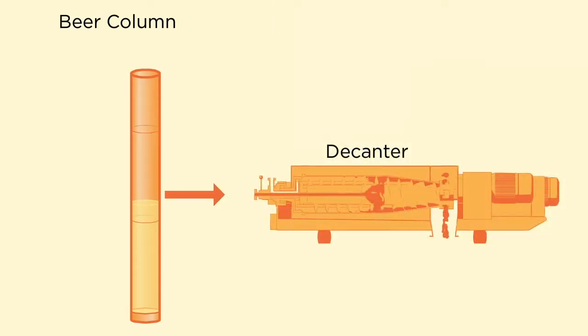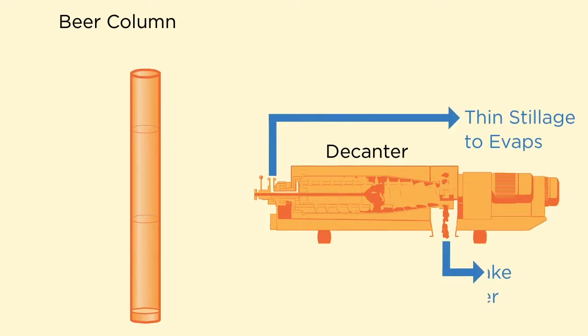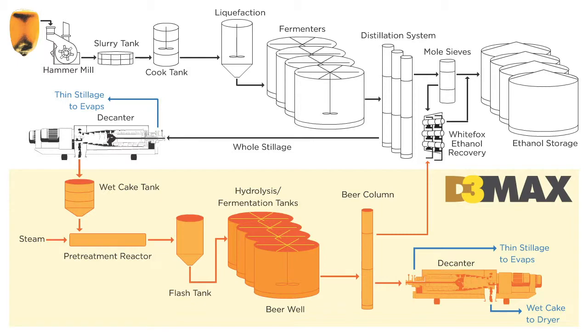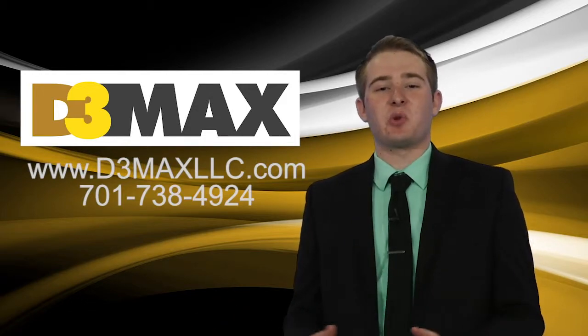The beer column bottoms from the D3 Max plant goes through a decanter, which gives you a thin stillage stream and high protein wet cake stream. The wet cake becomes the new high protein animal feed co-product for the plant.